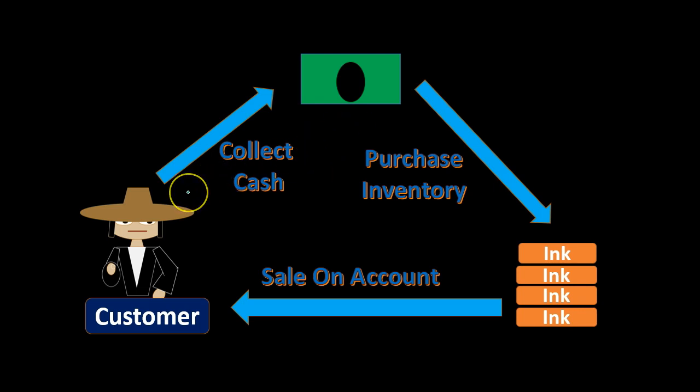This cycle over here when we're dealing with the customer is the receivable cycle, where we're typically going to invoice the client, have an account receivable, and then collect payment at a later point. Of course, we could at some point receive cash directly from the customer.